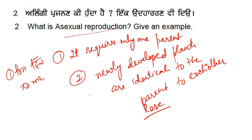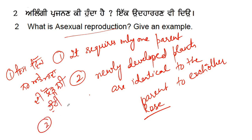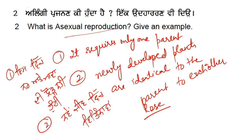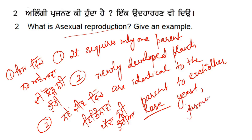In asexual reproduction, there is no need for a male and female. There is no variation in the new organism. I think I have now covered everything in the 7th class sample paper solution. You can also give examples of yeast, jasmine, and potato — whatever example you want to give is up to you.